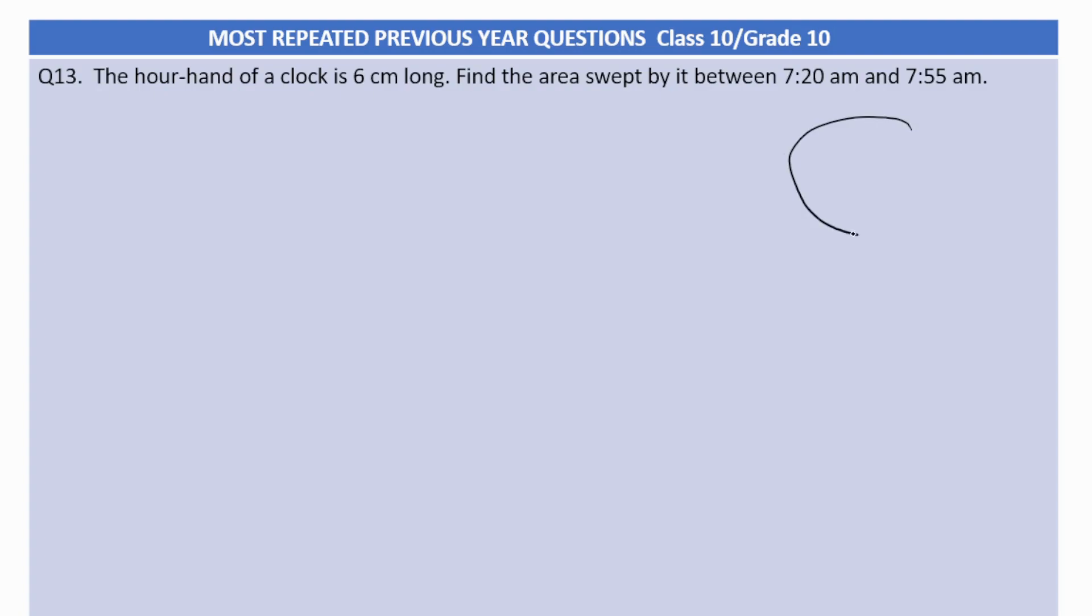Let's draw a rough clock. Suppose this is the clock and this will be 12, 1, 2, 3. This is a rough diagram of a clock, with numbers 5, 6, 7, 8, 9, 10 and 11.